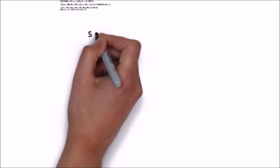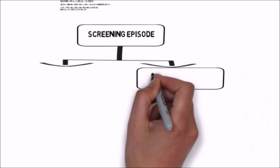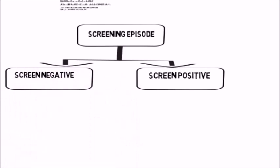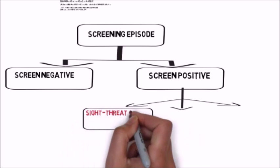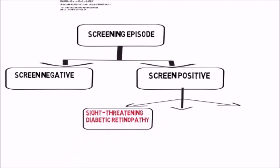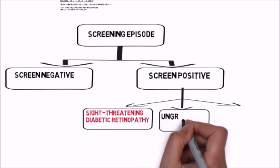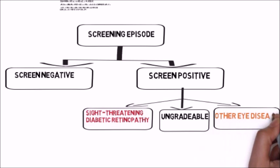To take an overview of the screening process, the screening episode fundamentally breaks down into two decisions, depending on whether the screen is positive or negative. If the screen is positive, this may be for three reasons: there may be diabetic retinopathy which has to be acted on; it may be that the screening isn't able to clearly determine if something serious is present; or the screening may have identified a condition which isn't diabetic retinopathy but requires some other form of treatment.